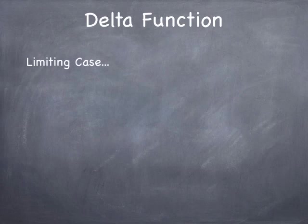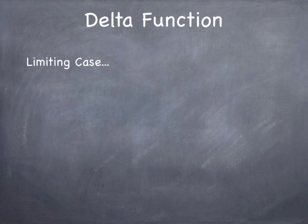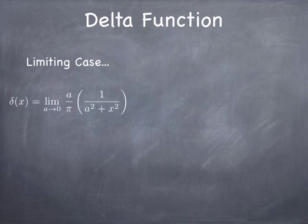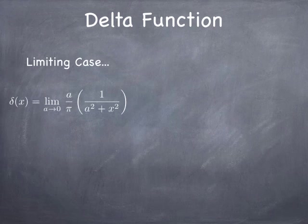It's hard to write down an algebraic expression for a delta function because there really isn't such a thing exactly. But there are a couple of limiting cases that give us some insight into what a delta function could be. You could think of it as the limit as a approaches 0 of this function. This is called a Lorentzian.